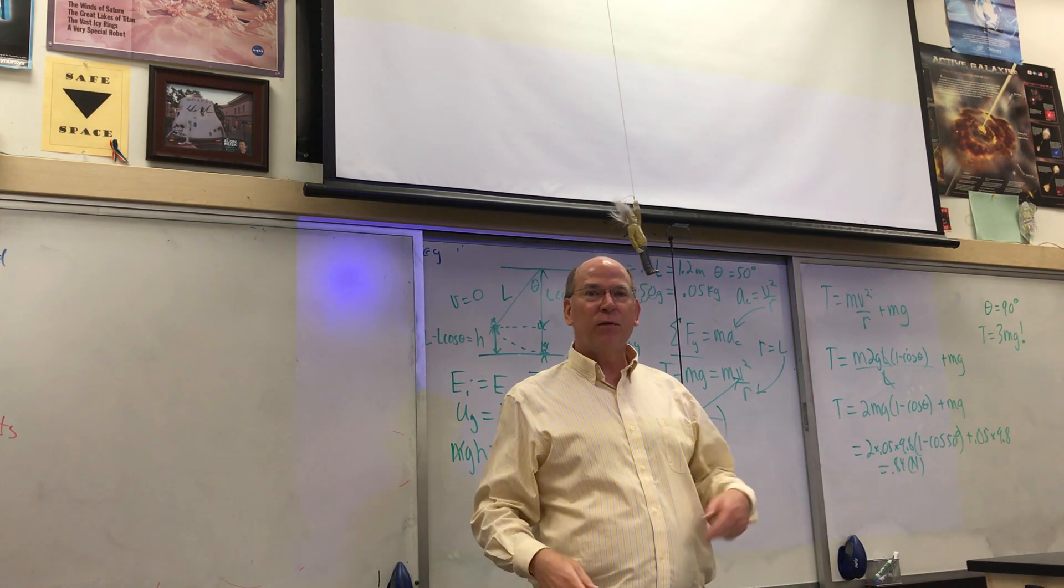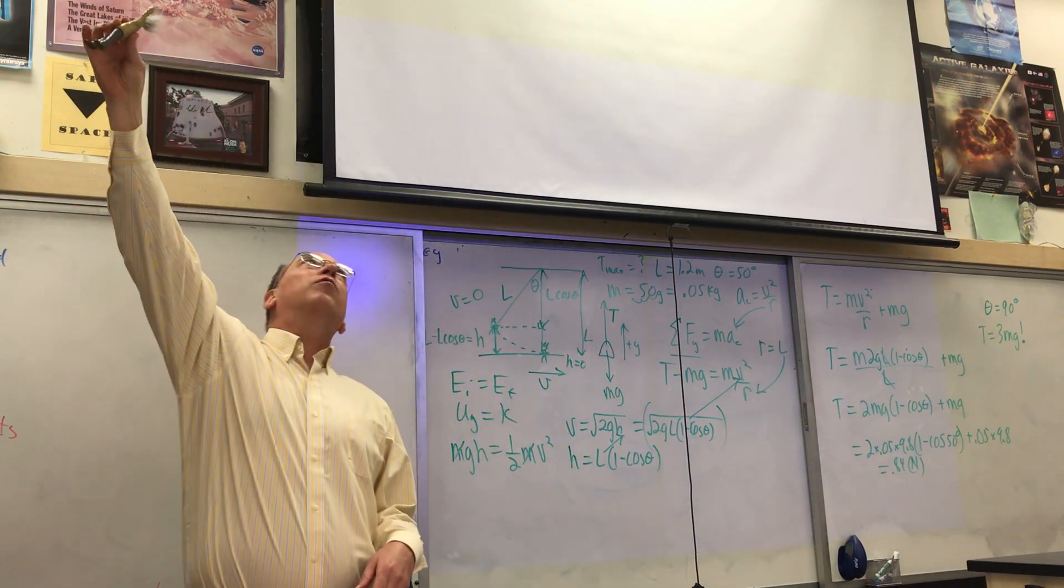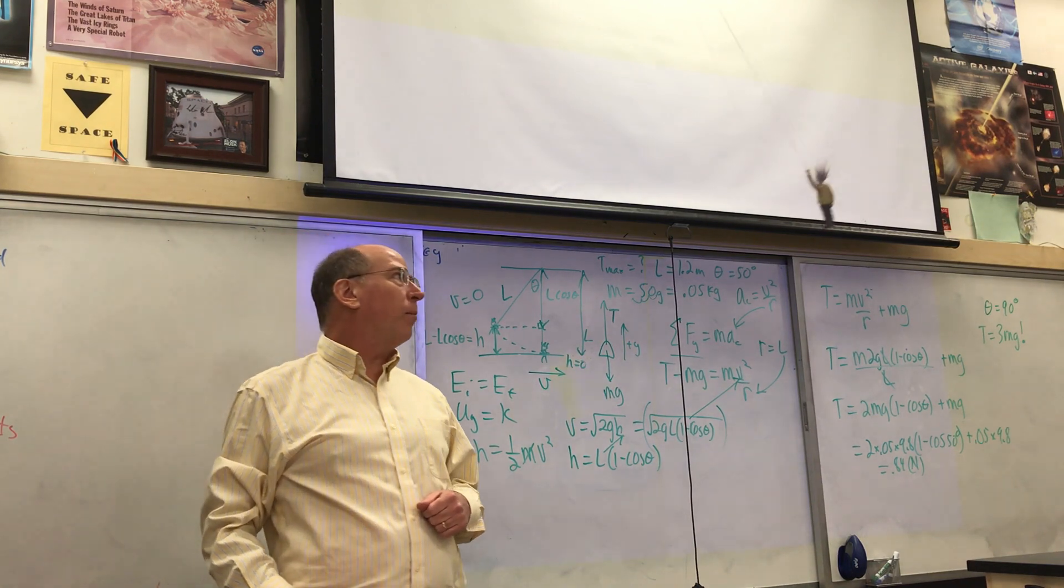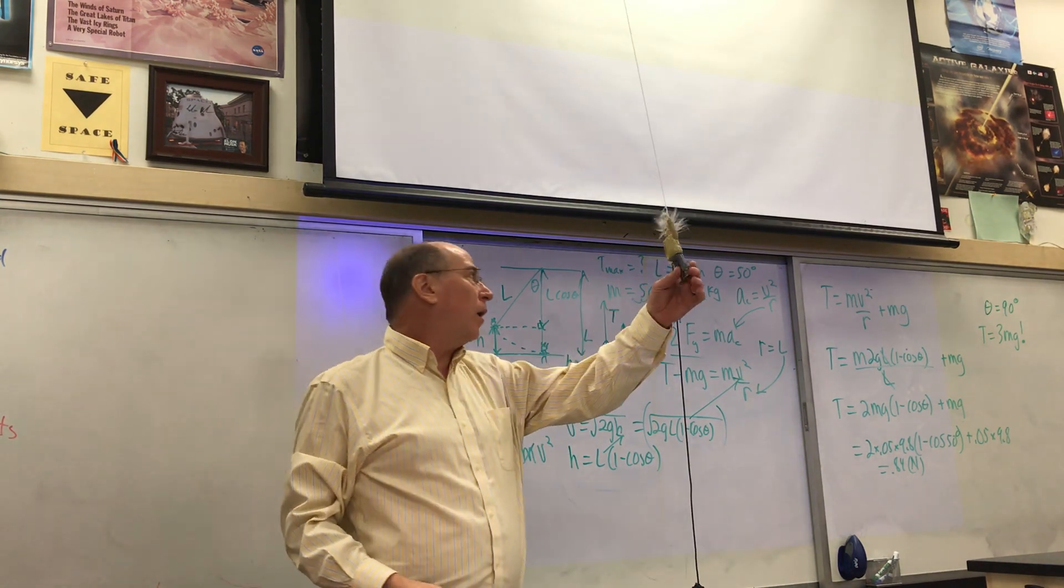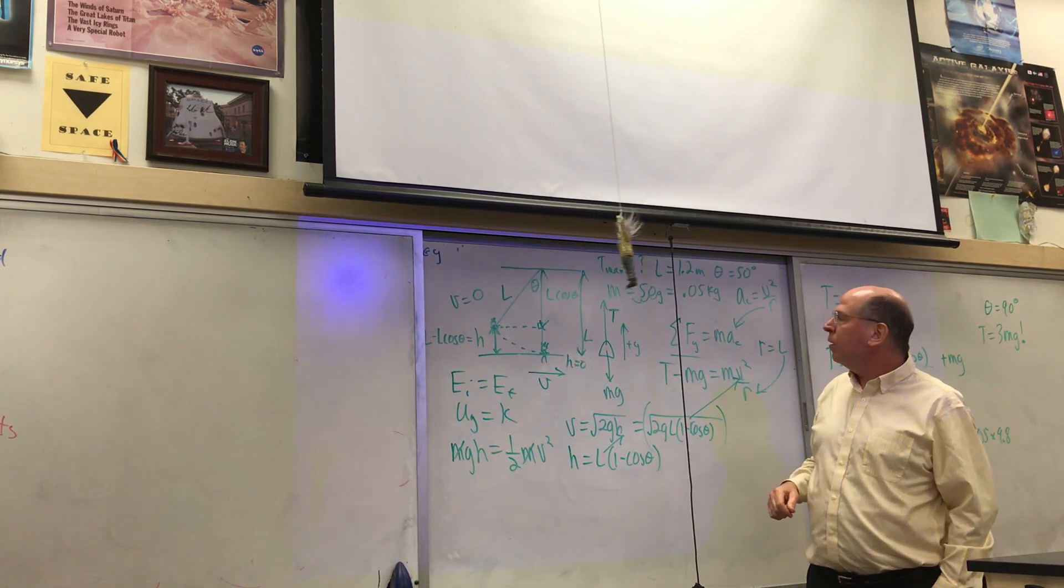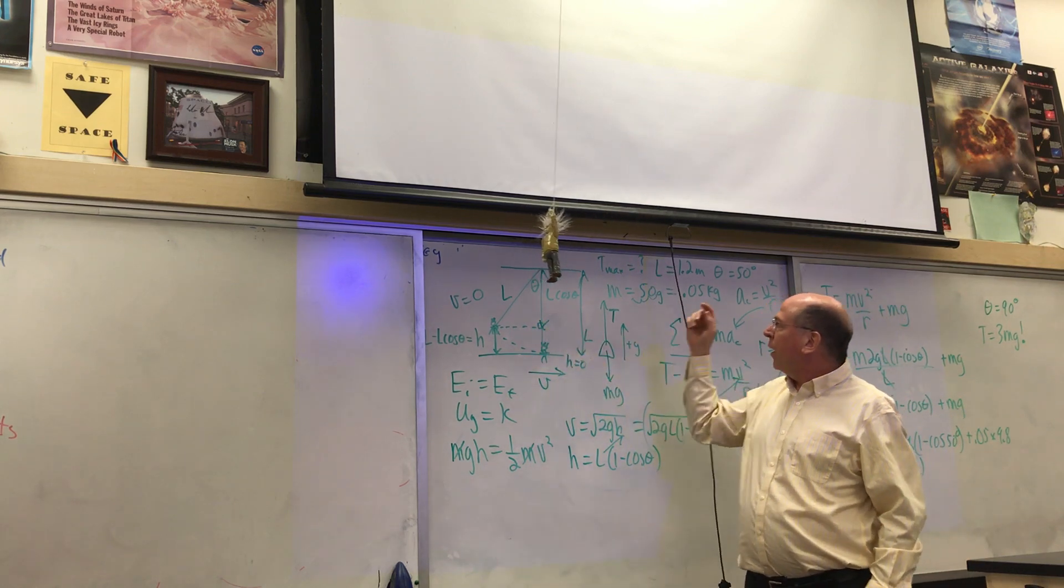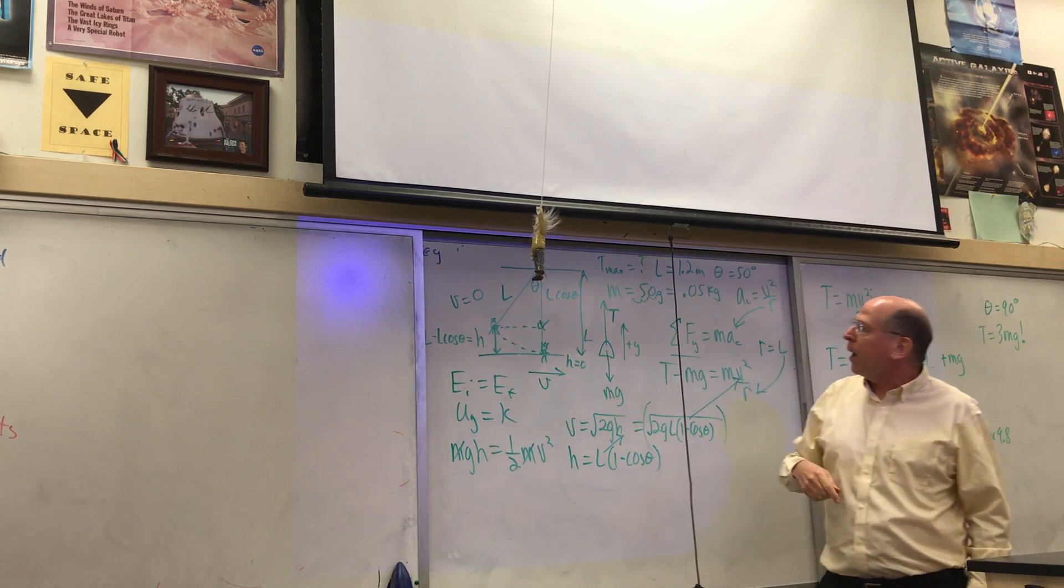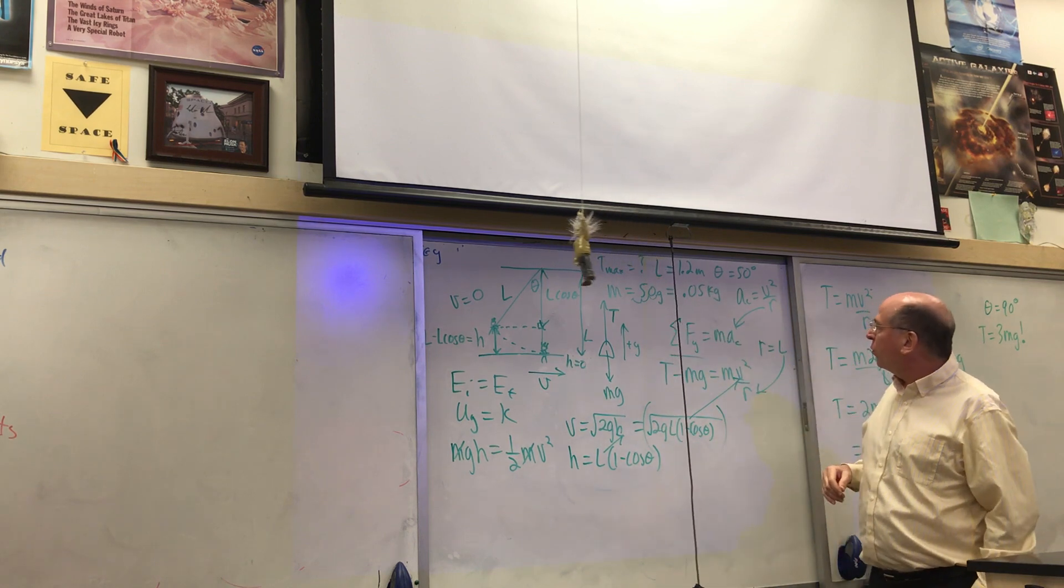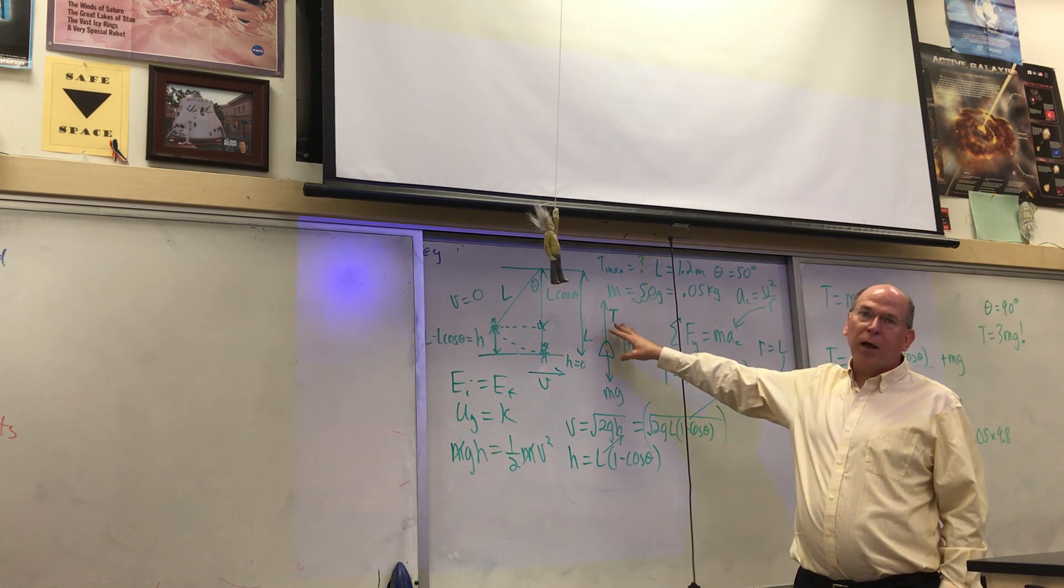Tarzan-Einstein just doesn't work, so Tar-Stein is going to swing from the vine and we want to figure out the maximum tension. We're given the angle that I pull Tar-Stein back, the length, and the mass of Tar-Stein, and we want to figure out the maximum tension.